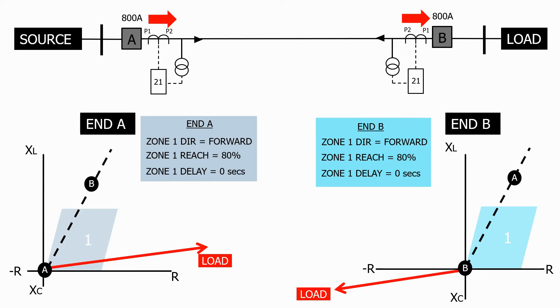Let's now add a fault at 10% of the line length near to end A. This time at end A the impedance is well within the zone 1 protection characteristic.